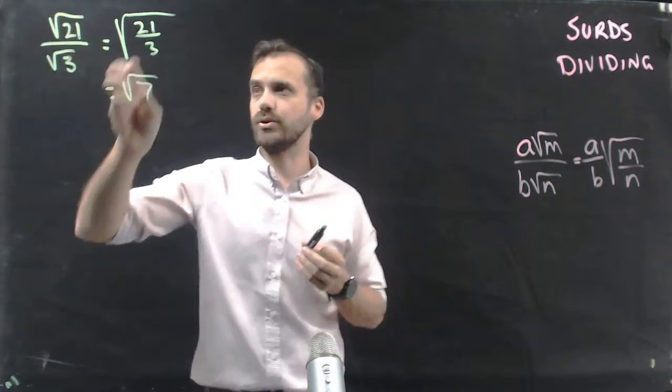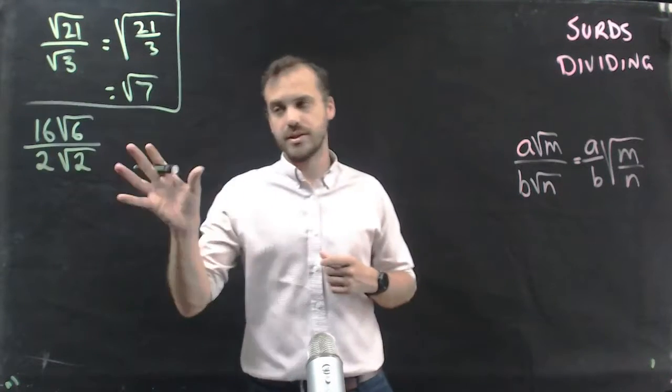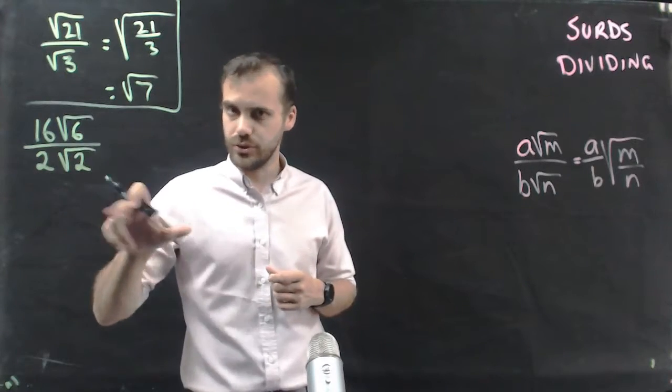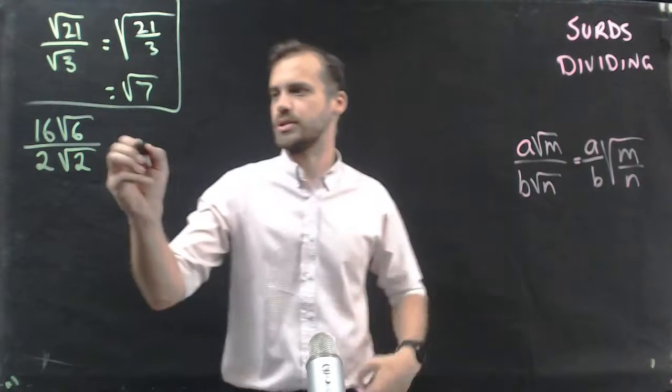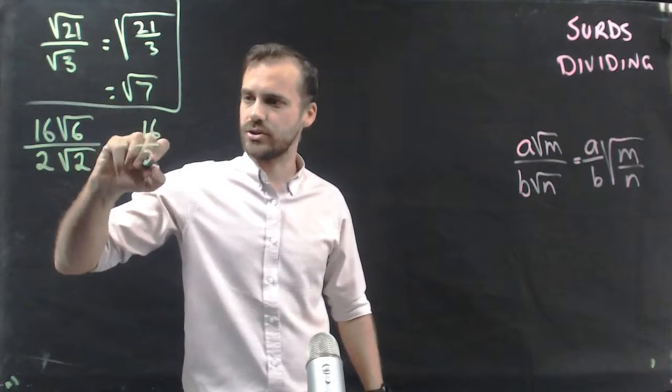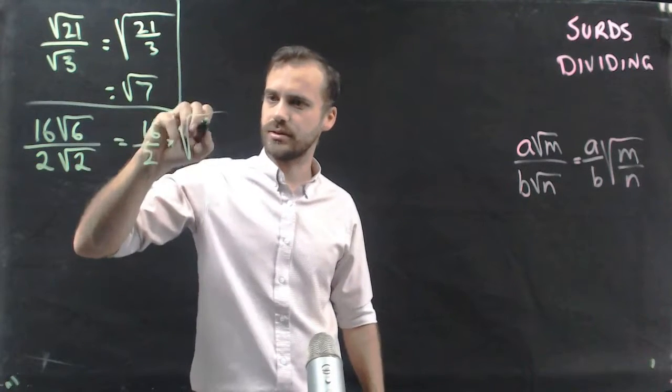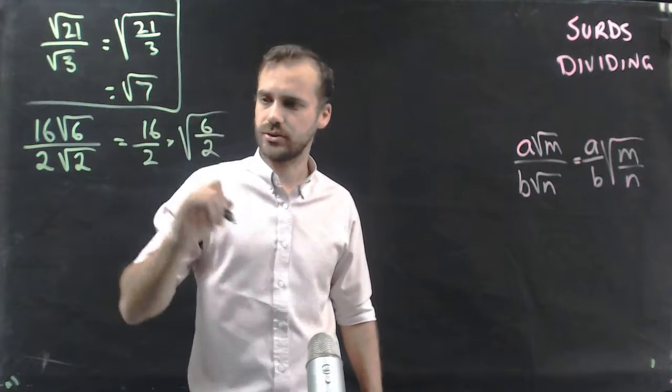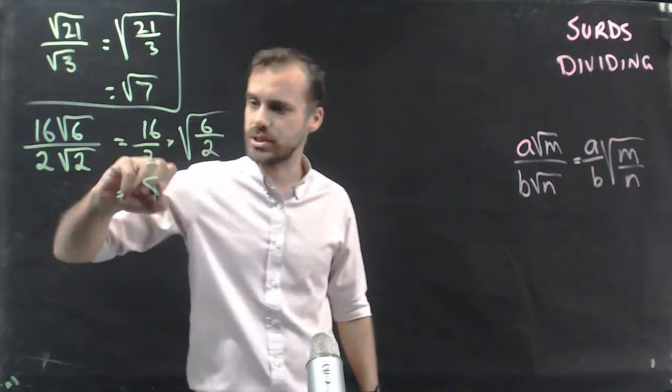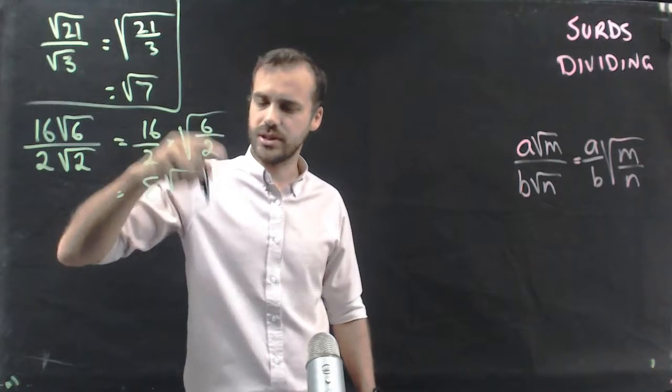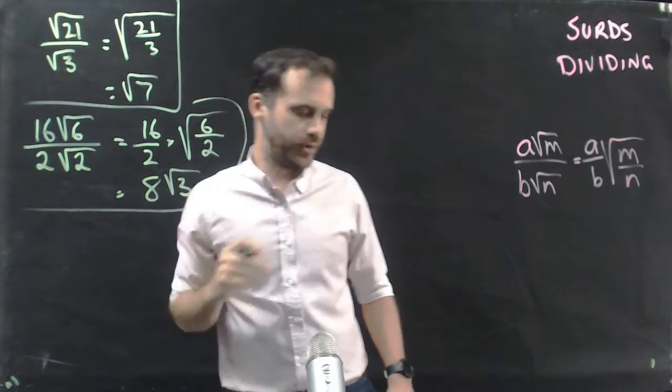You're dividing one surd by another, they all go under the one surd sign. So 16√6 over 2√2, it's exactly the same as before. So it's going to be equal to (16/2) times √(6/2). That's going to be equal to 8√3. Very straightforward.